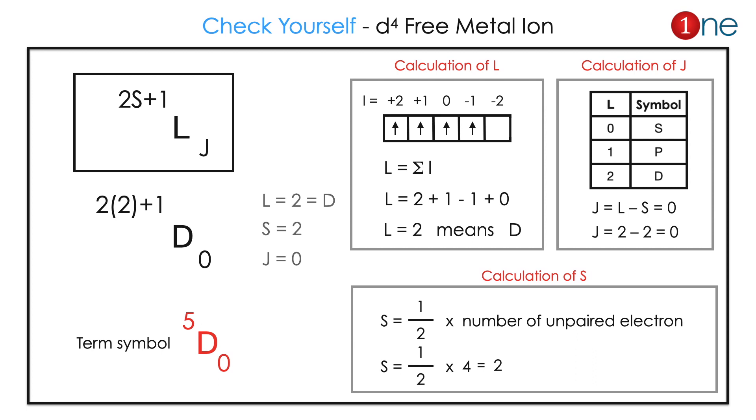If you calculate S, 4 unpaired electrons which is 1/2 multiplied by 4, it is equal to 2. Then you have J equals L minus S, which is 2 minus 2 equals 0. If you substitute in the formula, L is D there, J is 0. So term symbol will be 5D0.